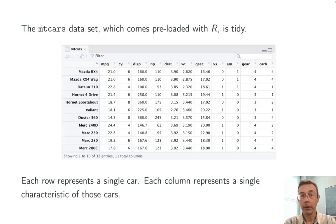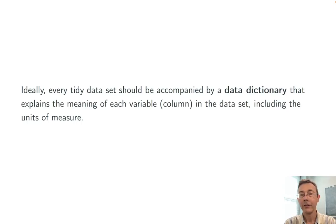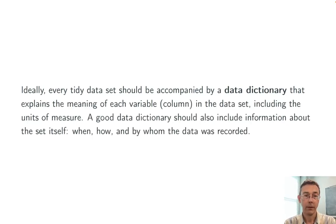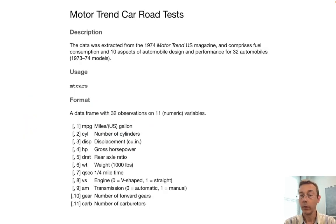One example here would be the MT cars data set, which comes preloaded with R. In this set, each row represents a single car, and each column represents a single characteristic of each of those cars. Ideally, every tidy data set should be accompanied by a data dictionary that explains the meaning of each variable along with the units of measure. A good data dictionary should also include some metadata about the set itself, including when, how, and by whom the data was recorded. With the MT cars data set, we can see that metadata with question mark MT cars. Here's our data dictionary, and as you can see, we have descriptions of each of the variables as well as a little bit of information about where this data came from.